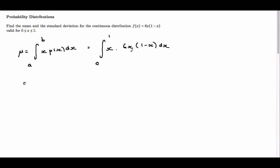So first thing we're going to do is multiply out the bracket so we have the integral from 0 to 1 of 6X squared minus 6X cubed.